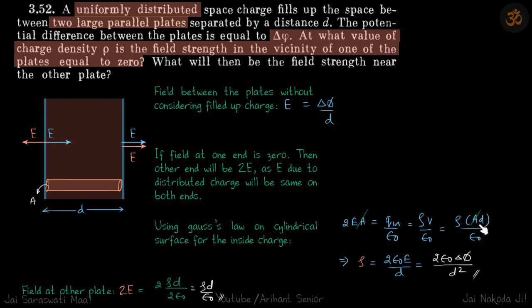And volume is A into D. So A will get cancelled and rho which we need is 2 epsilon E by D. Or E we can write as delta phi by D to get our answer.